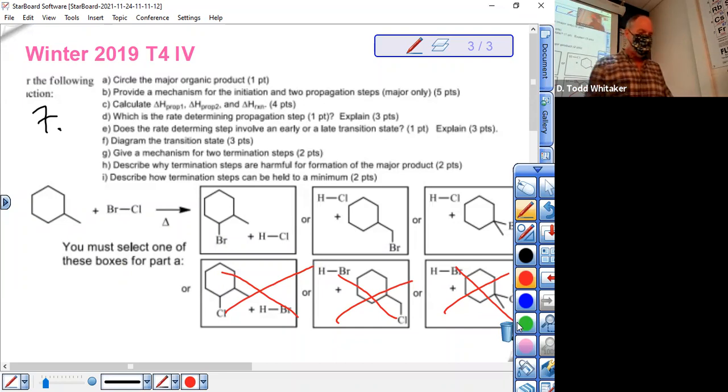The answer. At negative 438 kilojoules per mole, this bond forms a lot faster than negative 368 kilojoules per mole. Cross off every box with HBR. HBR forms much slower than HCl. That's the reason. Now I want the product that results from the most stable carbon radical.